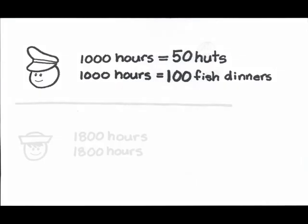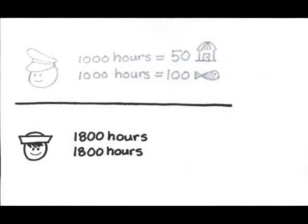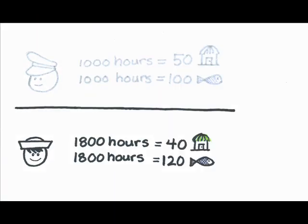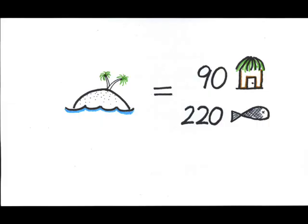In the meantime, Gilligan will spend 1,800 hours on hut building and 1,800 hours on fishing. Ultimately, he will build 40 huts and create 120 fish dinners. In total, the overall island production between the two producers is 90 huts and 220 fish dinners.